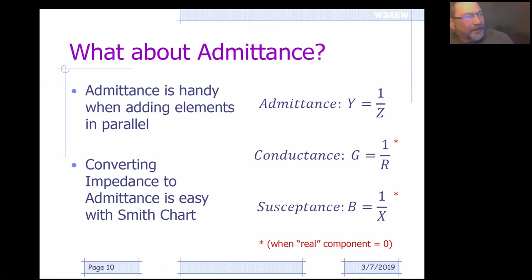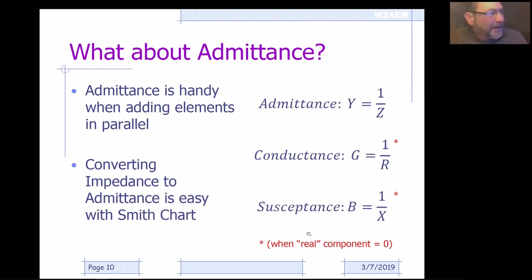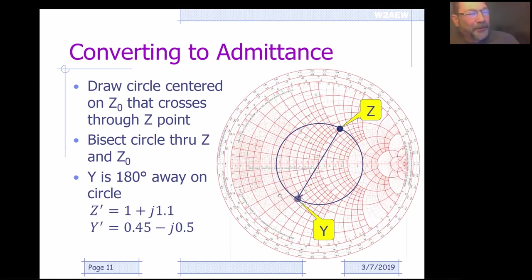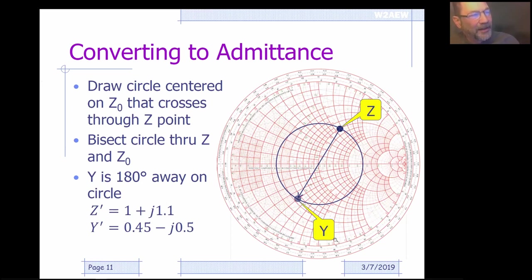For admittance, it's the inverse — and it's not simply one over R plus one over X, because that only works when the real component is zero. It gets a bit hairier. But you can do it graphically on the chart: you find your Z, put your compass on the center, draw a circle around the center point, draw a line through your point through the center to where it intersects the circle, and you can read off your Y. It's one of the features of the chart — it's easy to convert Zs to Ys graphically.